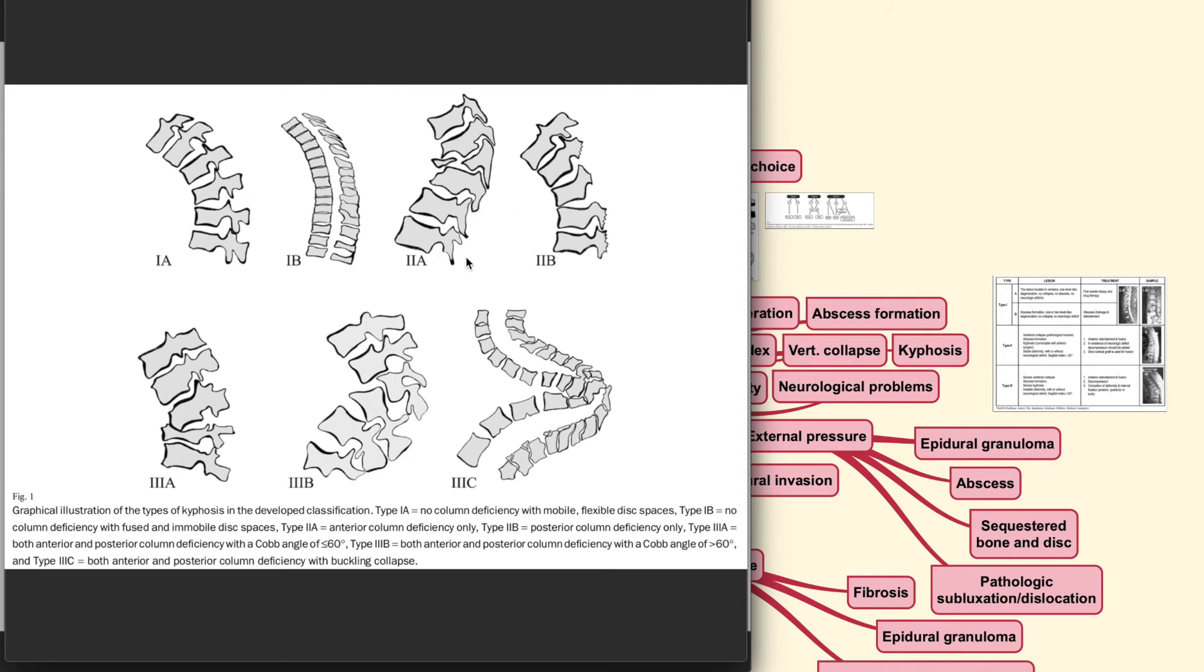For the type 2A and 2B, there will be a column deficiency. In type 2A, there is an anterior column deficiency and for the type 2B, there will be only posterior column deficiency.